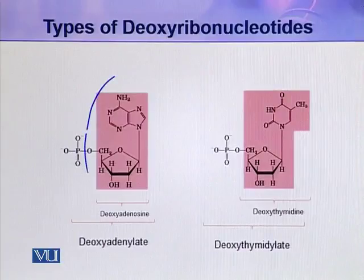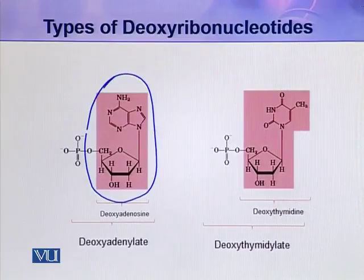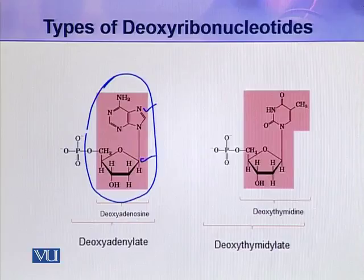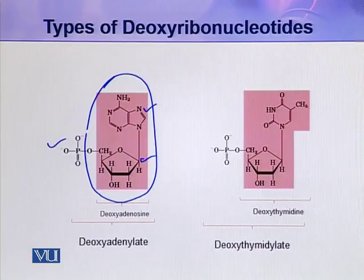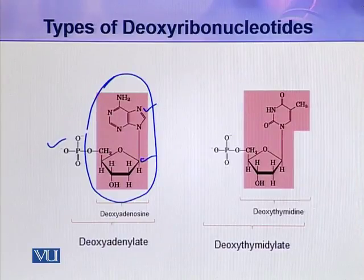As you can see in this picture, the colored portion is a nucleoside because it contains a pentose sugar and a nitrogenous base. This nitrogenous base is adenine, so the nucleoside is called deoxyadenosine. If this phosphate group is also included in this molecule, it becomes a nucleotide. This nucleotide, which contains adenine as its nitrogenous base, is called deoxyadenylate.